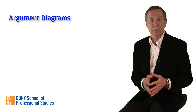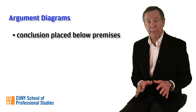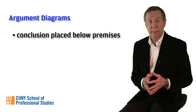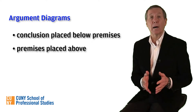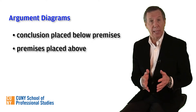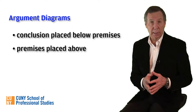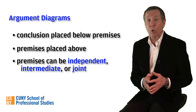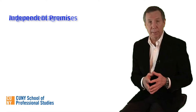As with standard format reconstruction, our diagrams will always place the conclusion below the premises, so that at the bottom of our diagram we'll find the circled number corresponding to the conclusion. The circled numbers representing the premises will be above, with brackets and arrows indicating how they collectively support the conclusion and how they relate to each other. As we'll discover, premises can be independent, intermediate, or joint, and we'll learn how to depict these relations by considering them in turn, starting with independent premises.